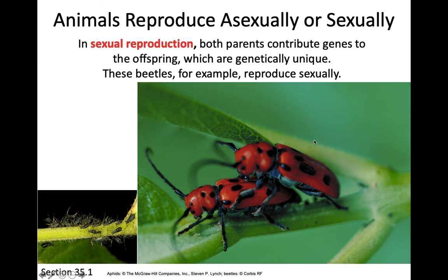Sexual reproduction requires two individuals. Their gametes will unite, forming a new zygote — a new embryo — that is genetically different from both parents. That's going to shake up genetics a little bit. With asexual reproduction all organisms are genetically the same, but here you get some of the dad's genes and some of the mother's genes, producing an offspring that's a little different from either parent.